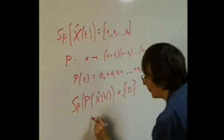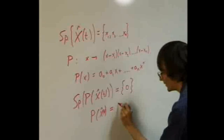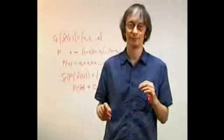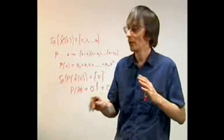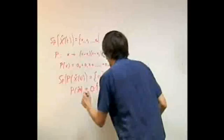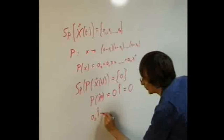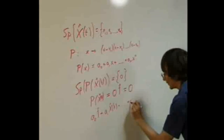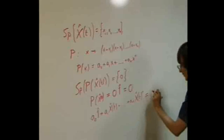And therefore, p of x of t itself must be 0 times the unit observable, which we also write just 0. So, although the observable x itself changes with time, we've found an algebraic equation that it satisfies at all times. Let me write it down explicitly: a0 times 1 plus a1 x of t plus an x of t to the n equals 0.